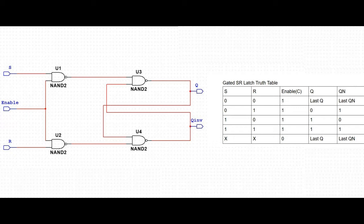A gated SR latch consists of the SR latch along with two additional NAND gates and a control input C. The enable input C determines when the SR input becomes effective. As long as the enable input is 0, the output of NAND gate A and B are 1, which in turn keeps the latch in the current stable state.